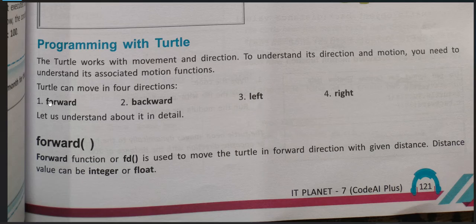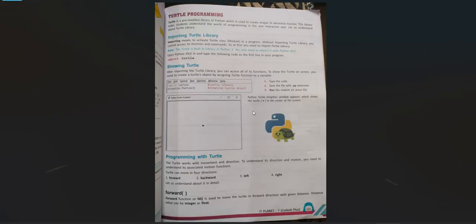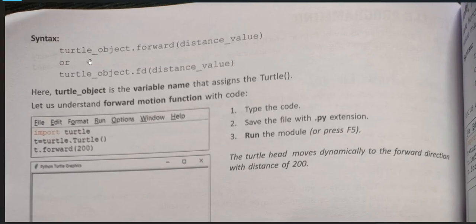There are four move functions - one is forward, backward, left, right. We will understand in detail. What do you mean by forward function? Forward function or FD is used to move the turtle in forward direction with a given distance. Distance value can be integer or float. Turtle object dot forward and distance value. This is the syntax. Or turtle object dot FD. So you can use forward or you can use FD. Both names are supported by the Python turtle library. Here a turtle object is a variable name that assigns the turtle.